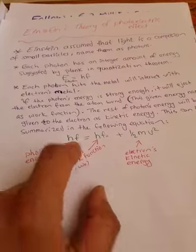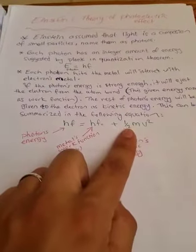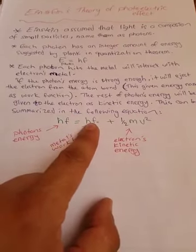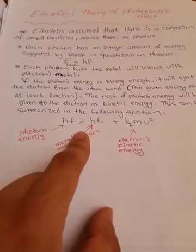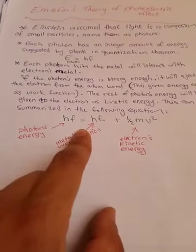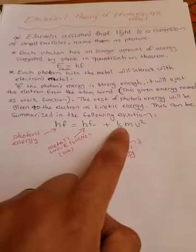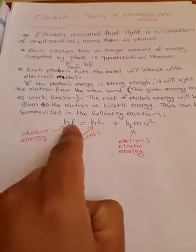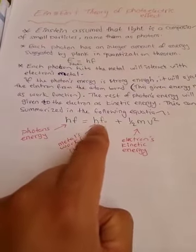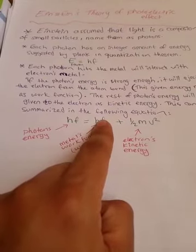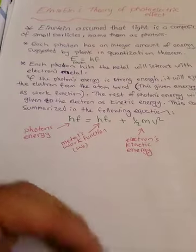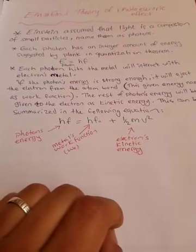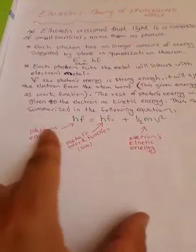The photon energy is hf. The photon gives some energy to the electron to escape from the metal — this is the work function — and whatever energy remains is given as kinetic energy to the electron. You only need the work function amount of energy to eject the electron. If the electron has extra energy, it becomes kinetic energy. If there's no extra energy, the electron just barely escapes the surface.